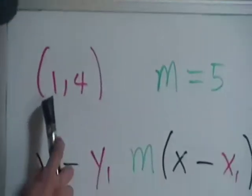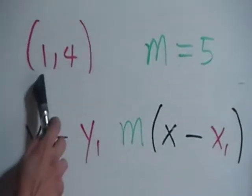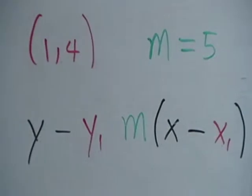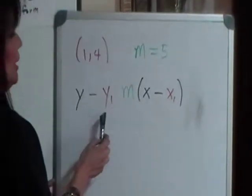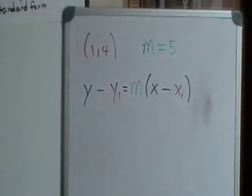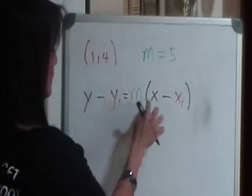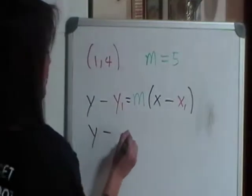Let's move over to this example that I have on the board. If I know that my line goes through the point 1, 4, and that it has slope m equals 5, I start with the point-slope form, y minus y sub 1 equals m times the quantity x minus x sub 1, and all I have to do is plug in these ingredients into this equation.